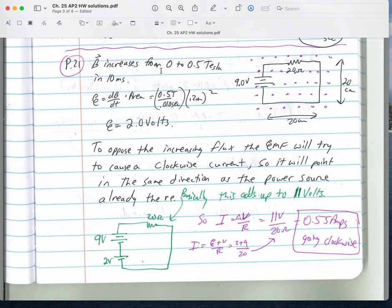For problem 21, the field strength increases from 0 to 0.5 Tesla in 10 milliseconds. I multiply it by the area and I get an EMF of 2 volts. Now if this flux is increasing, the EMF is going to oppose that increase, which would cause dots or X's in the center area. That's going to create a clockwise current, which is actually the same direction that this battery is creating. So essentially that extra 2 volts is going to be pointing in the same direction as this power source, so I showed that in green down here. That's how we get 0.55 amps going clockwise. I said that if this field strength was decreasing, then our voltage would point the other way to try to maintain the field strength.